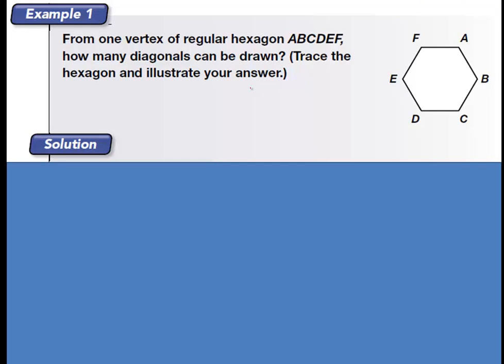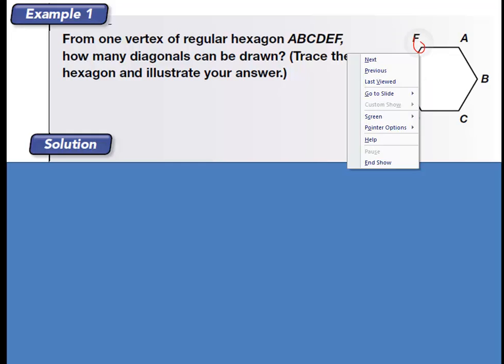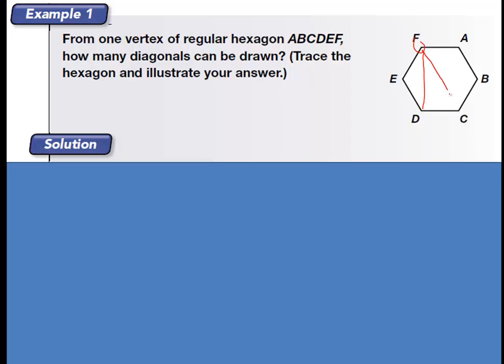From one vertex of this regular hexagon on the right here, how many diagonals, how many slices can be drawn through it? So just pick one of those. I'm going to pick F here, and I'm going to just start drawing. There's one, there's two, there's three. So three diagonals can be drawn through that hexagon, which creates one, two, three, four triangles.